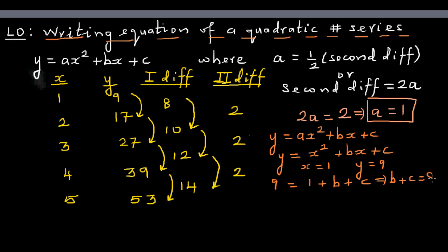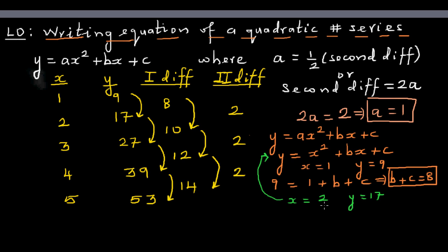When x = 2, y = 17. Substituting into the equation: 17 = 2² + b(2) + c, so 17 = 4 + 2b + c. Taking away 4 from both sides, the second equation becomes 2b + c = 13.